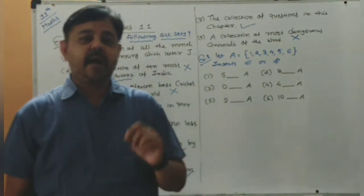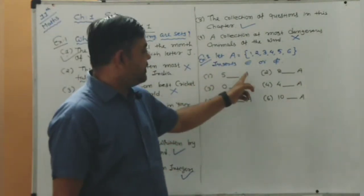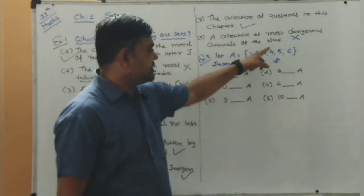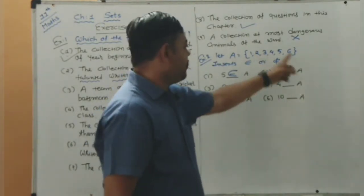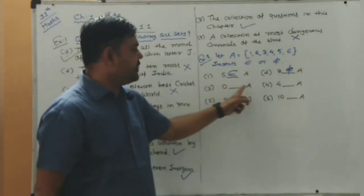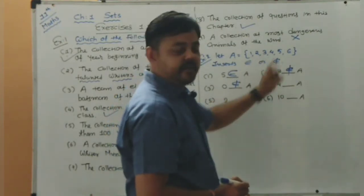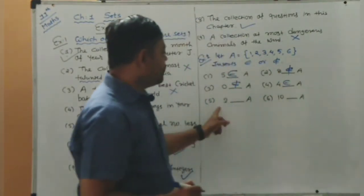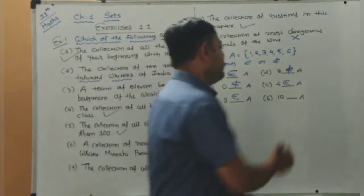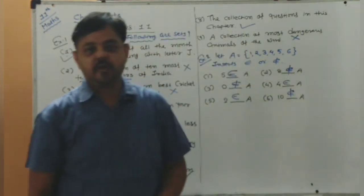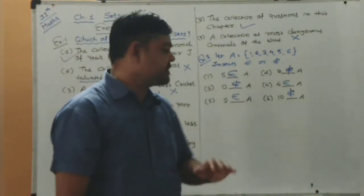Now Example number two: let A = {1, 2, 3, 4, 5, 6} and insert 'belongs to' or 'does not belong to'. Five is in A — yes, that belongs to. Eight is in A — no, does not belong to. Zero is in A — no, does not belong to. Four is in A — yes, belongs to. Two belongs to A — yes. Ten does not belong to A. Fill in the blanks with belongs to or does not belong to.